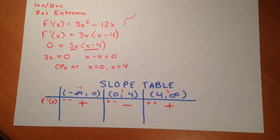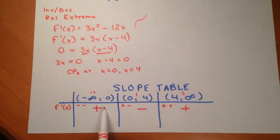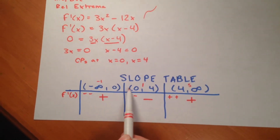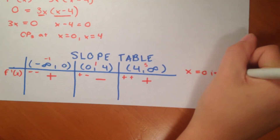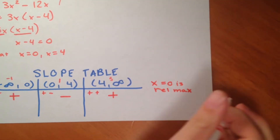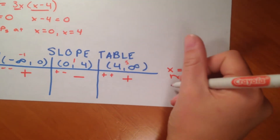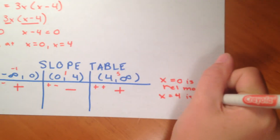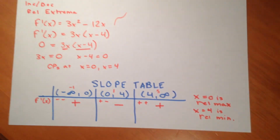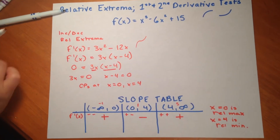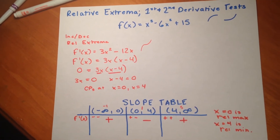So what does this tell us about f prime x? Because the function is changing from increasing to decreasing at x equals 0, x equals 0 is a relative maximum. And because the function is changing from decreasing to increasing at x equals 4, x equals 4 is a relative minimum. Now that we know the increasing and decreasing behavior, we can take it one step further using the second derivative test.